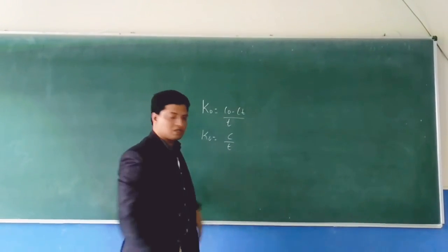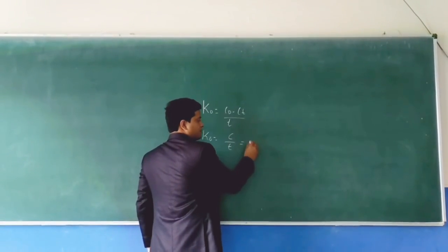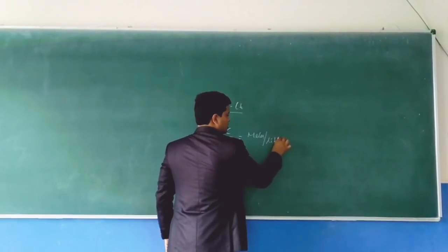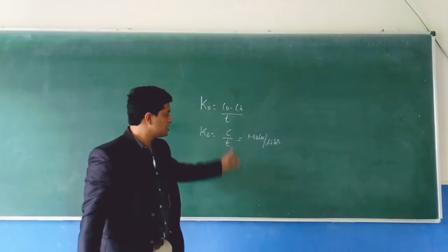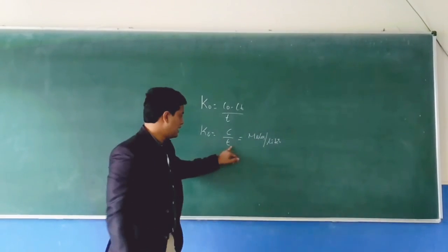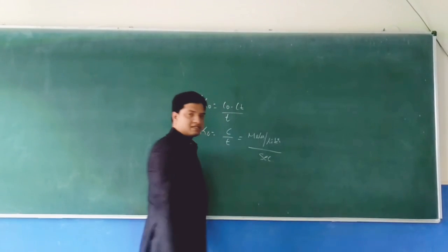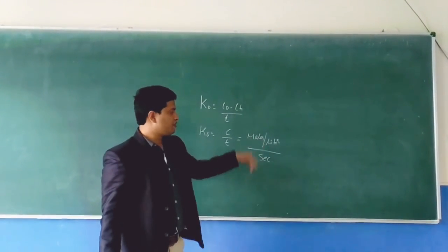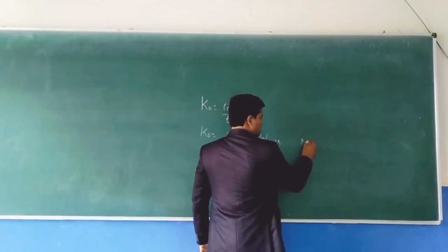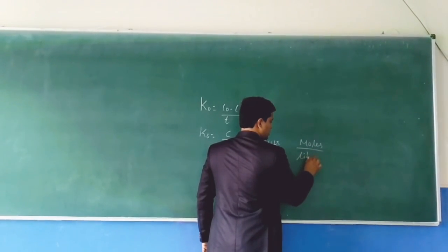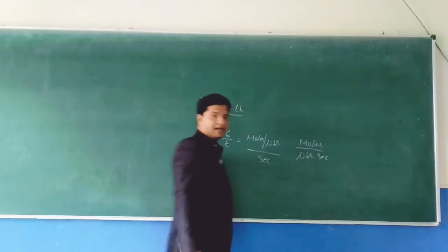What are the units for concentration? Concentration is expressed as moles per liter, and time is expressed in seconds. If you rearrange this, you will get moles per liter per second.